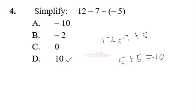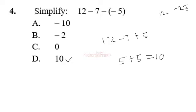You can also add negative 7 and positive 5 first to get negative 2, then add it to 12: 12 minus 2 equals 10. Either way the answer is 10.